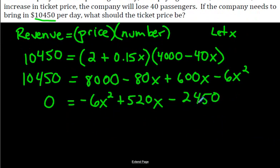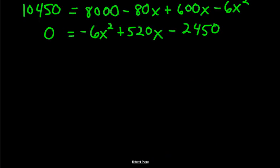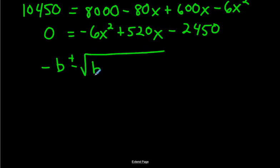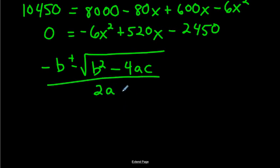Now we jump right into the quadratic formula. The mnemonic: there once was a negative boy who couldn't decide whether to go to a radical party. The boy was square, so he did not go. He missed out on four awesome cookies, and the party was over at 2a. So the formula is x = (−b ± √(b² − 4ac)) / 2a. Here a = −6, b = 520, and c = −2,450.